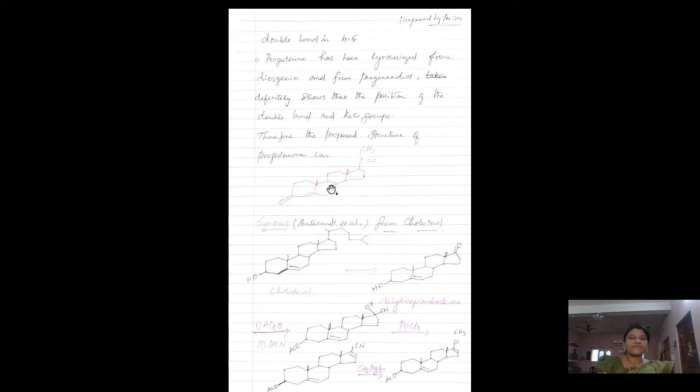This structure is confirmed with the synthesis from cholesterol. Cholesterol is converted into dehydroepiandrosterone. This on acylation - acylation is used to protect the hydroxyl group. And further on treatment with hydrogen cyanide, it forms a cyanohydrin.